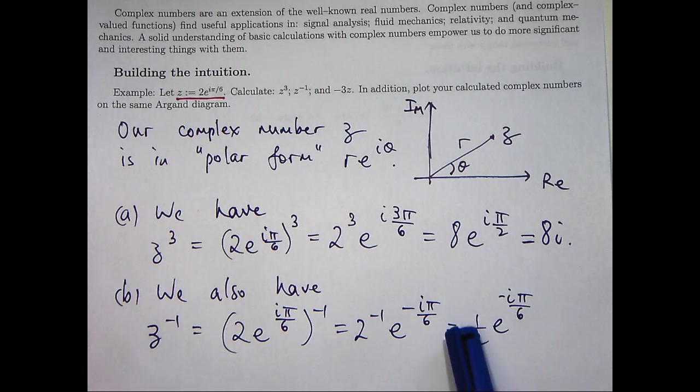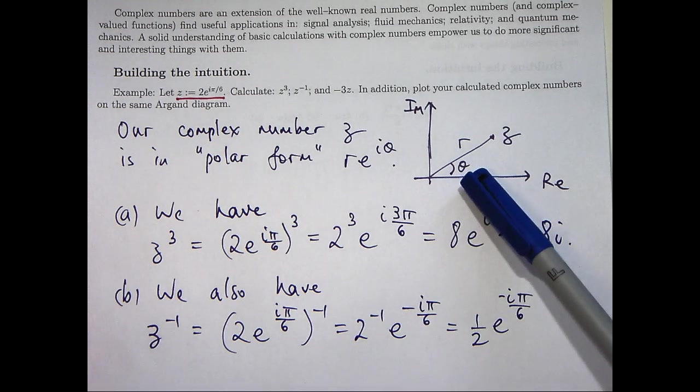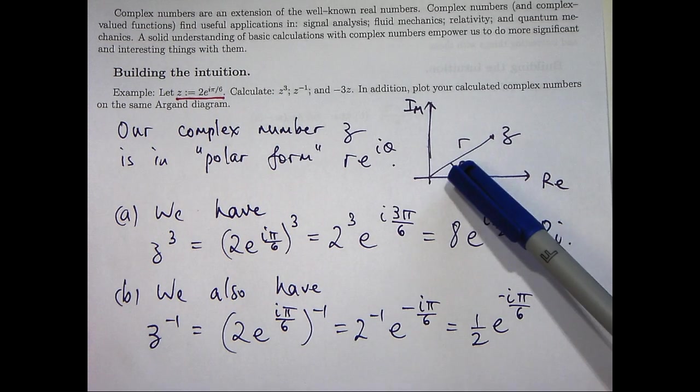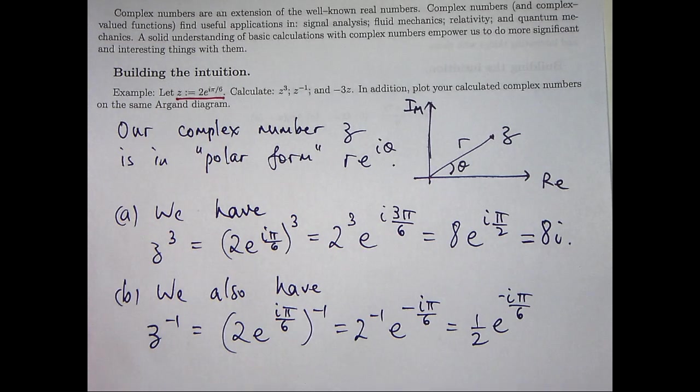So for this complex number, we go out from the origin 1/2 along the positive real axis, and then go in a clockwise fashion π/6 because of that negative sign.